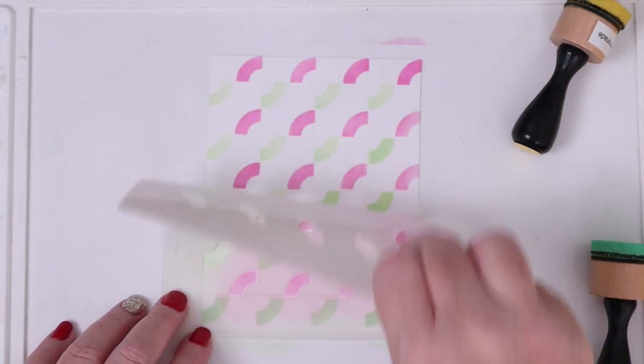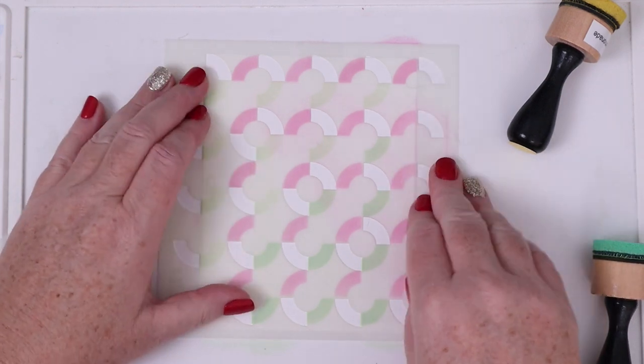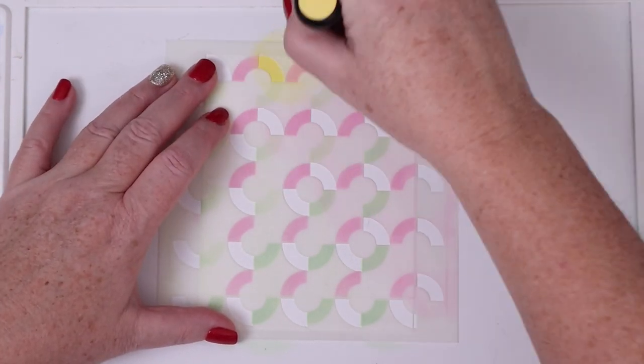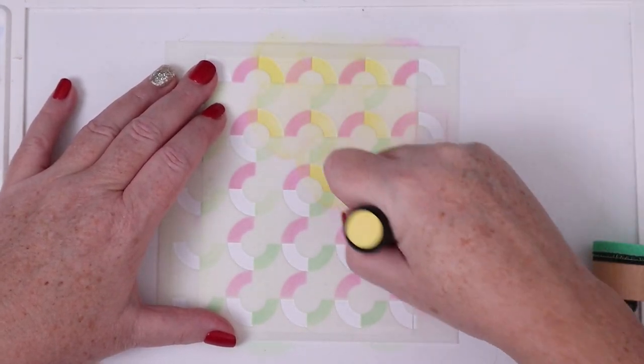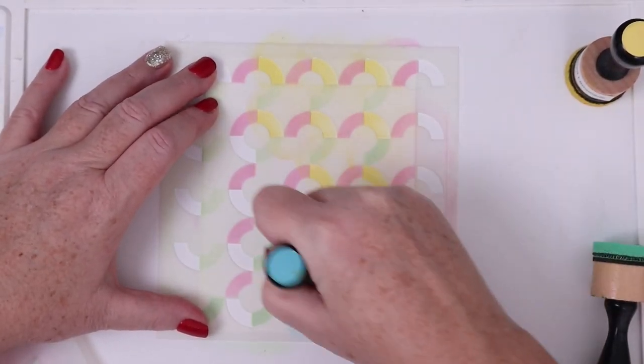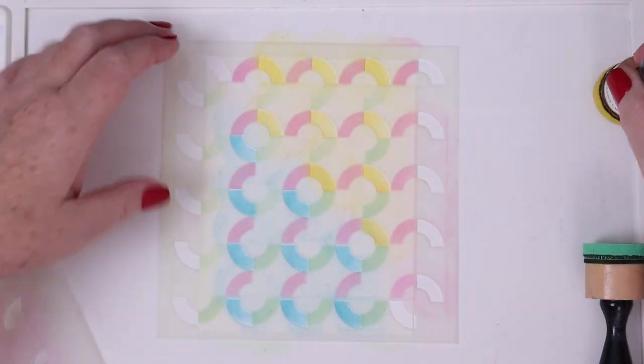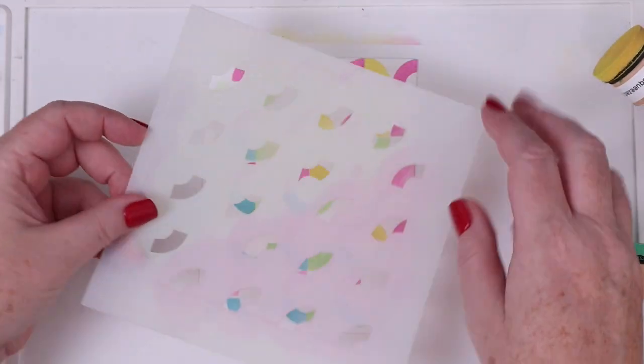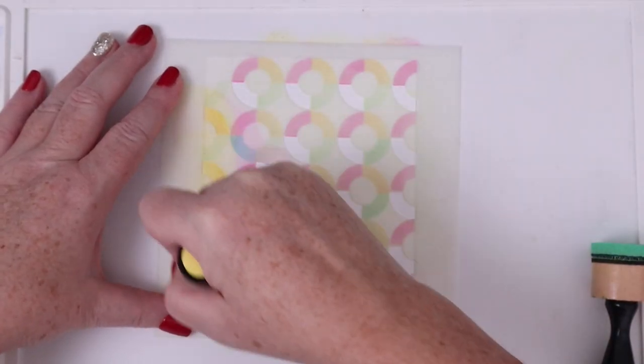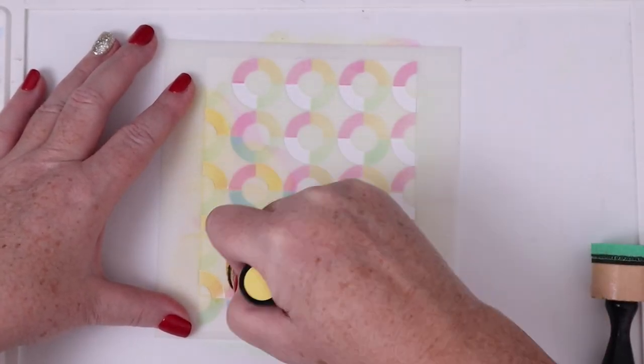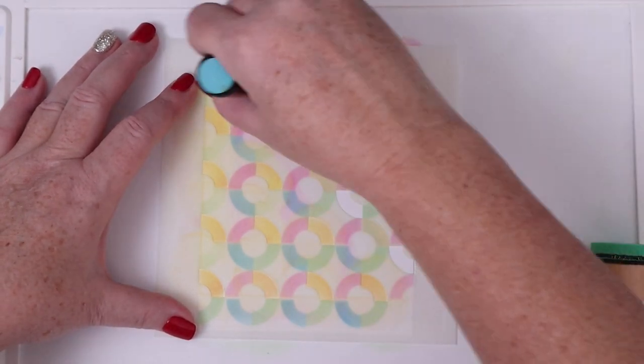I peeled off stencil number two and went back to stencil number one and rotated it 90 degrees clockwise. This gives me openings for the upper right arcs which will be Squeezed Lemonade and the lower left arcs which will be Tumbled Glass. Then I need to do the same thing for stencil number two - rotate it 90 degrees clockwise to fill in the yellow arcs this time at the bottom of the card and the blue arcs this time at the top of the card.